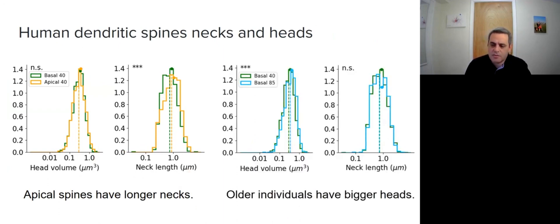At the right, we compared spines from young and old individuals. We found the same distribution of neck length in a large number of spines, but bigger heads in the 85-year-old individual.